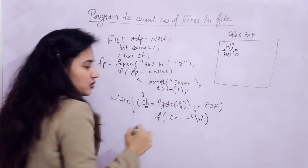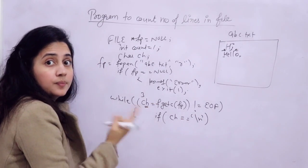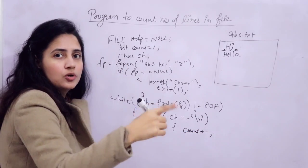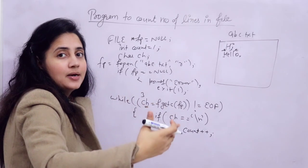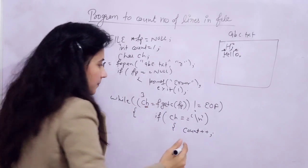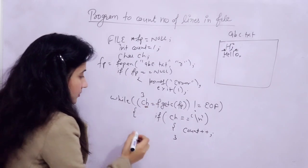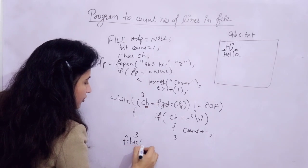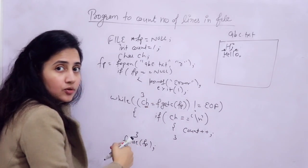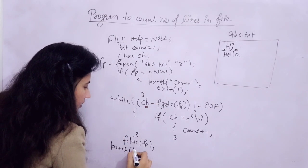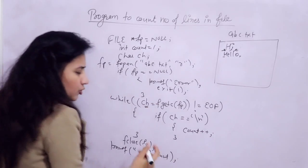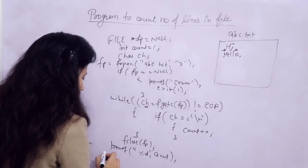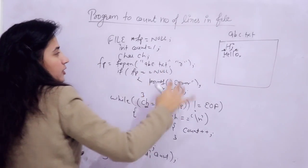Inside the while loop, the condition is: if the character we are fetching equals '\n', then do count++ — increment the count by 1. After the while loop closes, close the file with fclose and print the count value: printf("number of lines are %d", count). That's it.